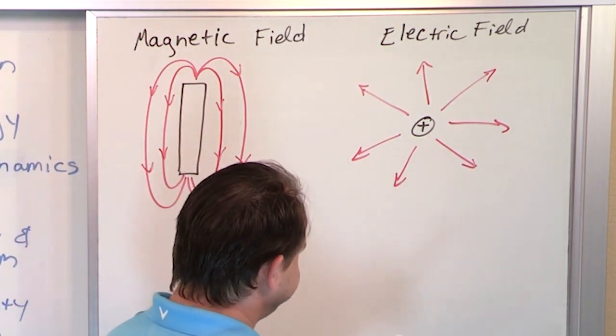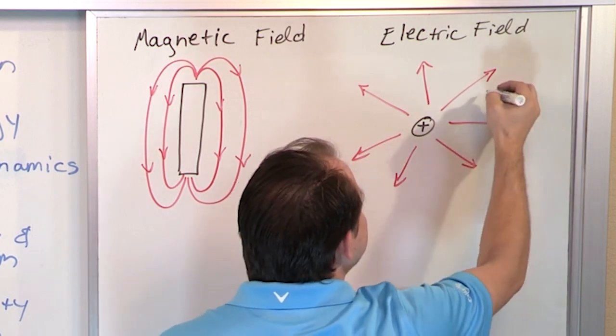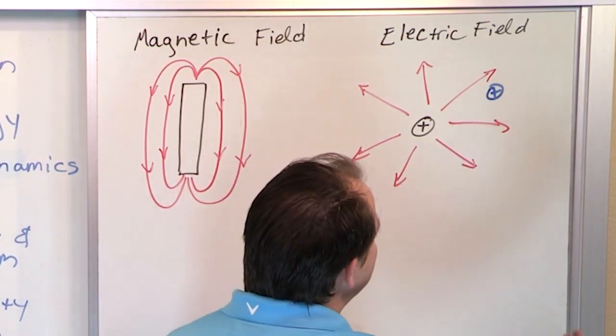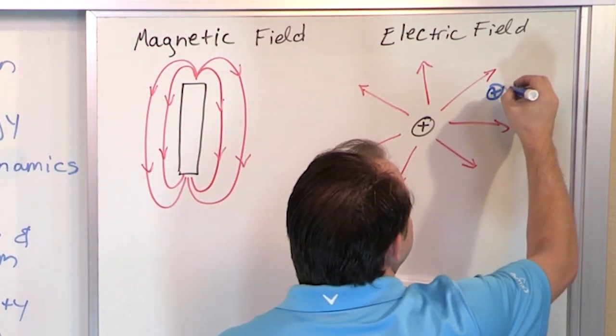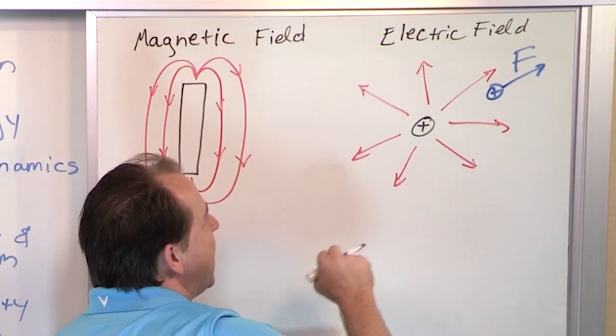If I were to take another proton and stick it inside this electric field right here, like this is a test particle, what's going to happen? It turns out that this electric field is going to push on this charged particle and it's going to push with a force F and it's going to push it directly away from this guy.